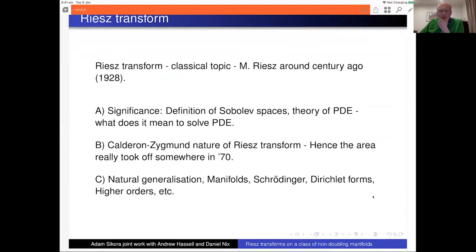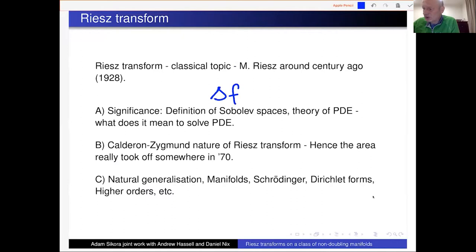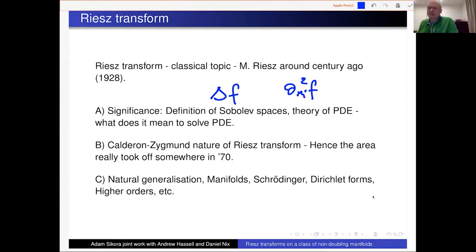The Riesz transform is a classical problem. The first paper starts with Marcel Riesz publishing in 1928, so in eight years we'll have the 100th anniversary of this research area. The significance is connected to the definition of Sobolev spaces and the theory of PDEs. In a sense, you consider the Laplacian of f and wonder if it means you can calculate the second derivatives of f separately. The answer is given by Riesz transforms - mostly yes. You can calculate the Laplacian of f and also the derivatives of your function. That's one of the interesting points here.